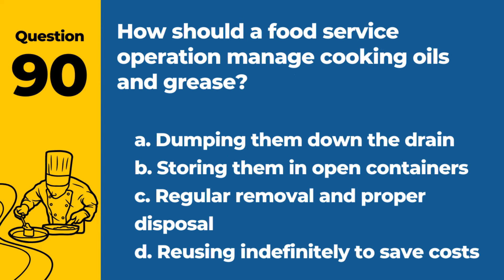Question 90. How should a food service operation manage cooking oils and grease? a. Dumping them down the drain. b. Storing them in open containers. c. Regular removal and proper disposal. d. Reusing indefinitely to save costs. Answer: c. Regular removal and proper disposal. Proper handling of oils and grease prevents environmental issues and maintains kitchen safety.